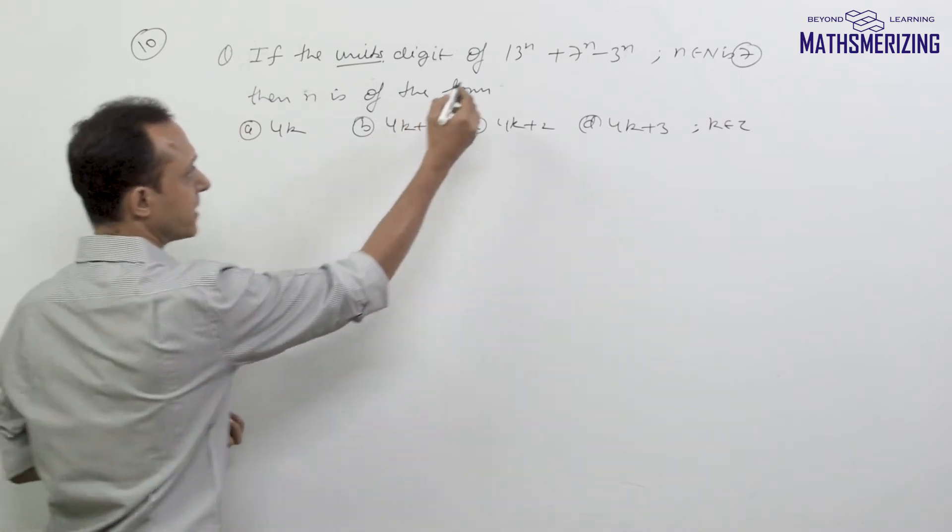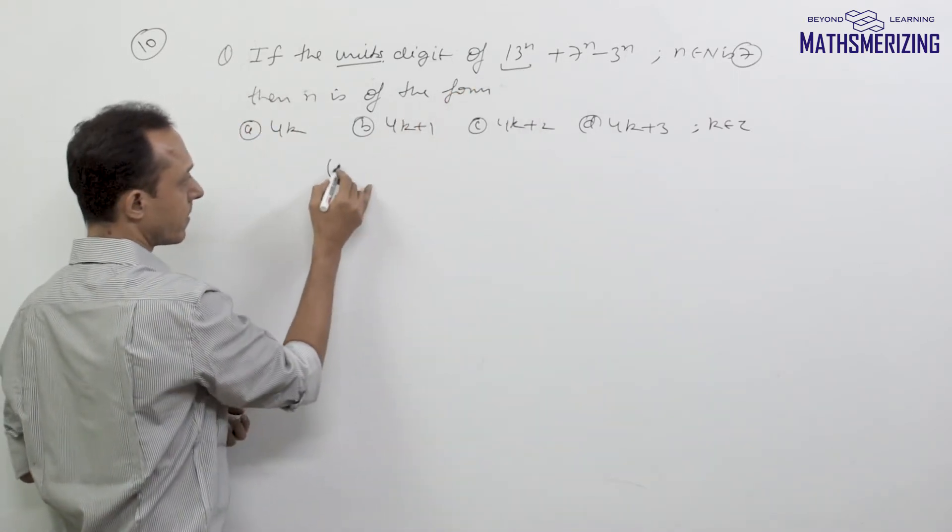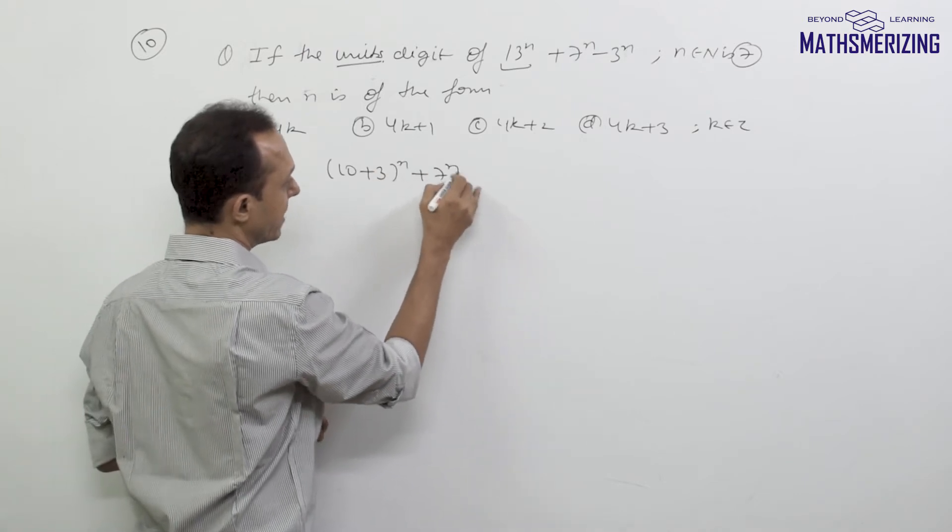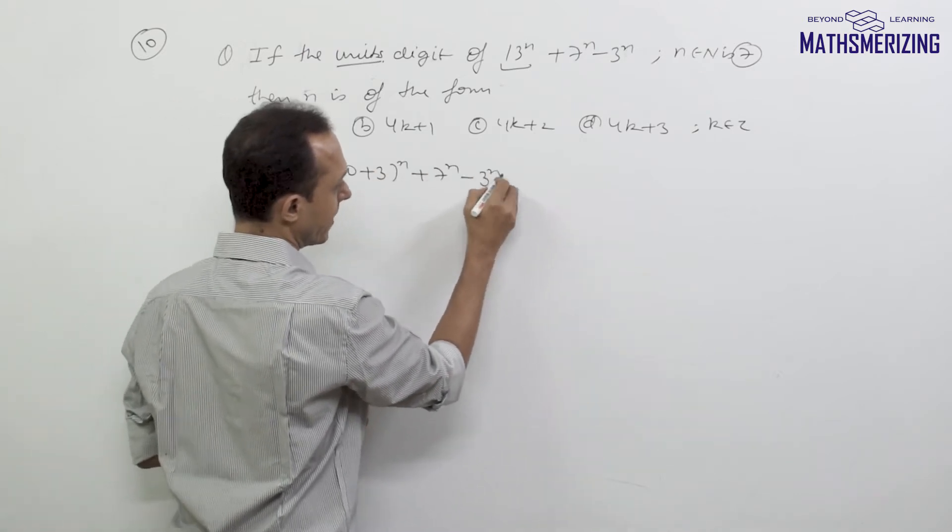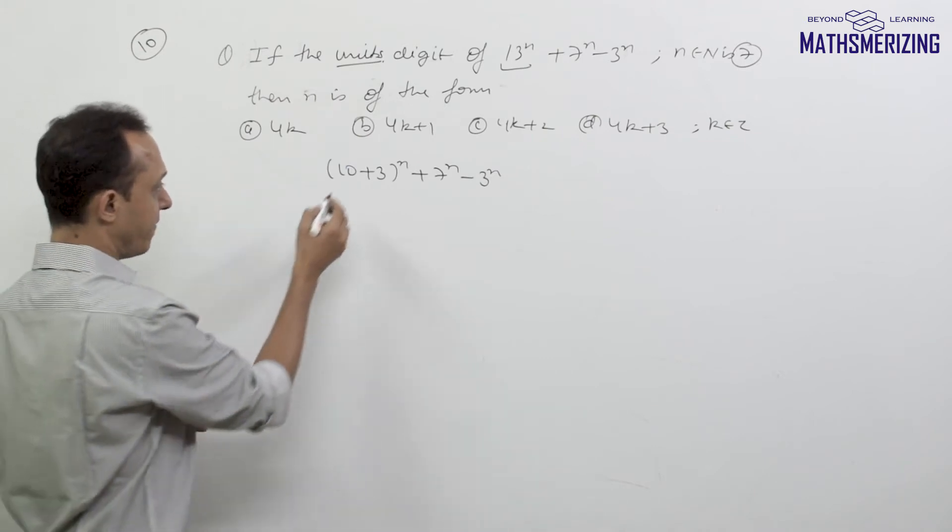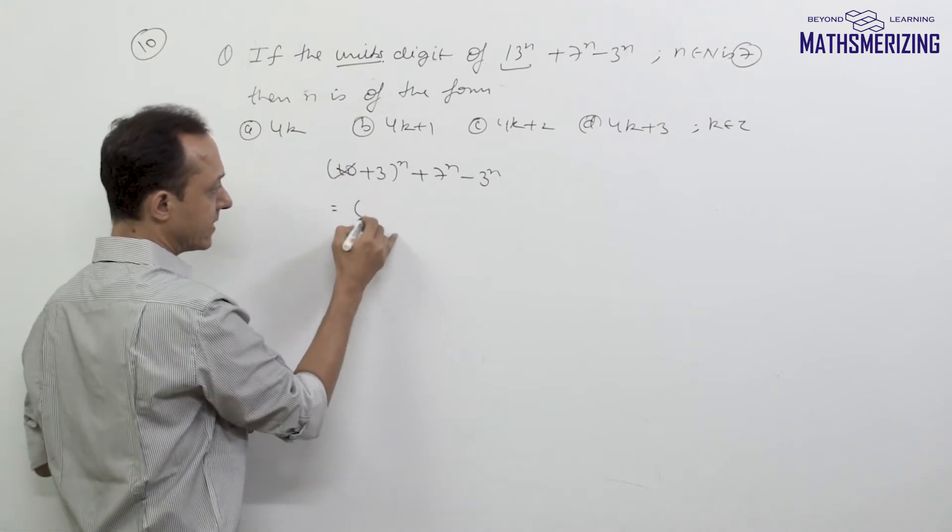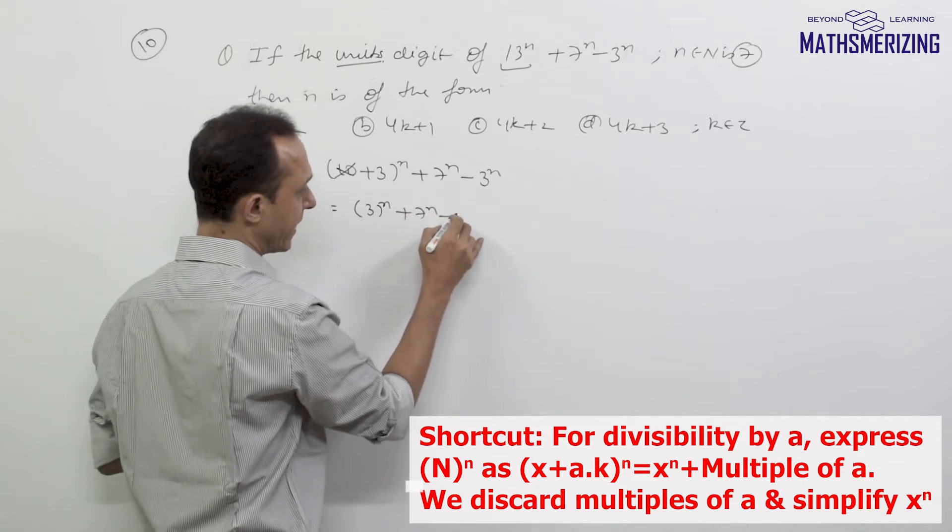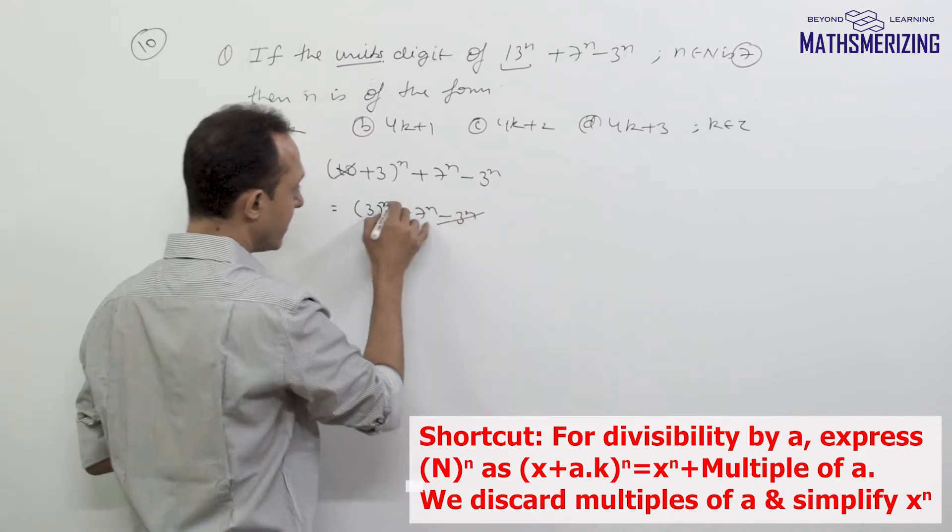What I will do is express this 13 as (10 + 3)^n + 7^n - 3^n. If I use the shortcut, I will get it as 3^n + 7^n - 3^n, so it will cancel.